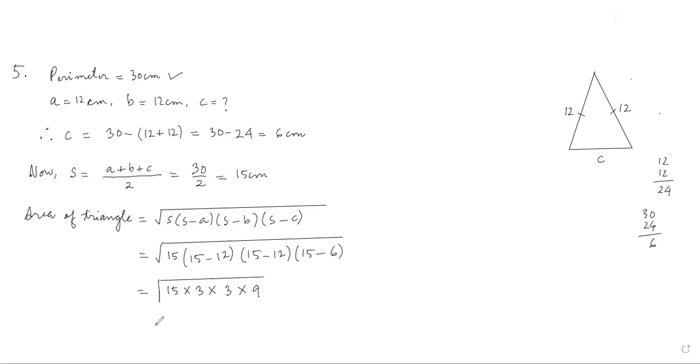Just make it like this: 15, 3 into 5, and 3 into 3. So it is 15 and 9. The answer is 9√15 centimeters square.